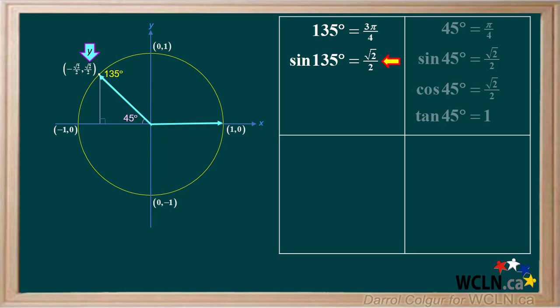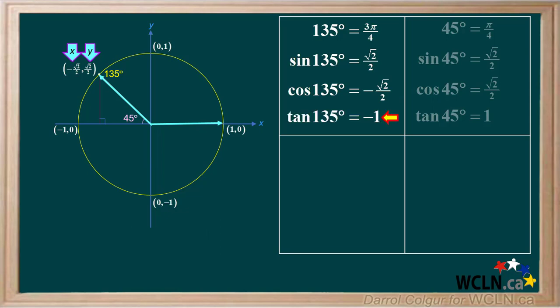To get the sine of 135, we base it on the reference angle 45 degrees, but pay close attention to whether it's positive or negative. The sine is y over r, or positive root 2 over 2 over 1, which is positive root 2 over 2 — the sine is positive for any angle in the second quadrant. The cosine is x over r, which is negative root 2 over 2 over 1, or negative root 2 over 2 — cosine is negative in the second quadrant. The tangent is y over x, which is positive root 2 over 2 divided by negative root 2 over 2, giving negative 1 — tangent is also negative in the second quadrant.